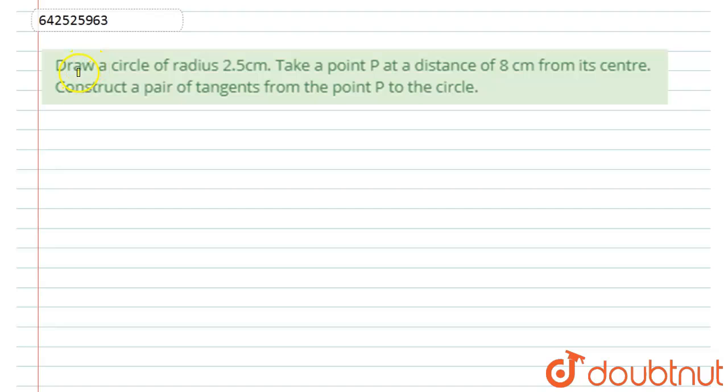Hello student, let's start with the question. Here we have given, draw a circle of radius 2.5 cm. Take a point P at a distance of 8 cm from its center. And then construct a pair of tangents from the point P to the circle. So let's start with the solution.